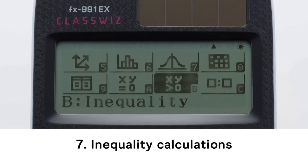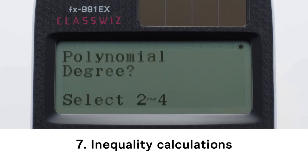Inequality calculations. First, specify the degree of the inequality: second, third, fourth degree, using a number key: two, three, four.